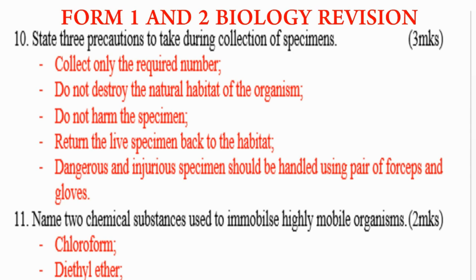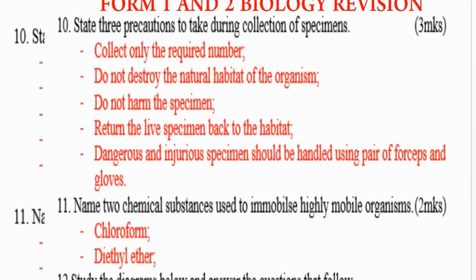Also, return the live specimen back to the habitat. Dangerous specimens should be handled using gloves. Question number 11: Name two chemical substances used to immobilize highly mobile organisms. The two chemicals are chloroform and diethyl ether. These are used to make fast-moving animals unable to move so they can be collected.